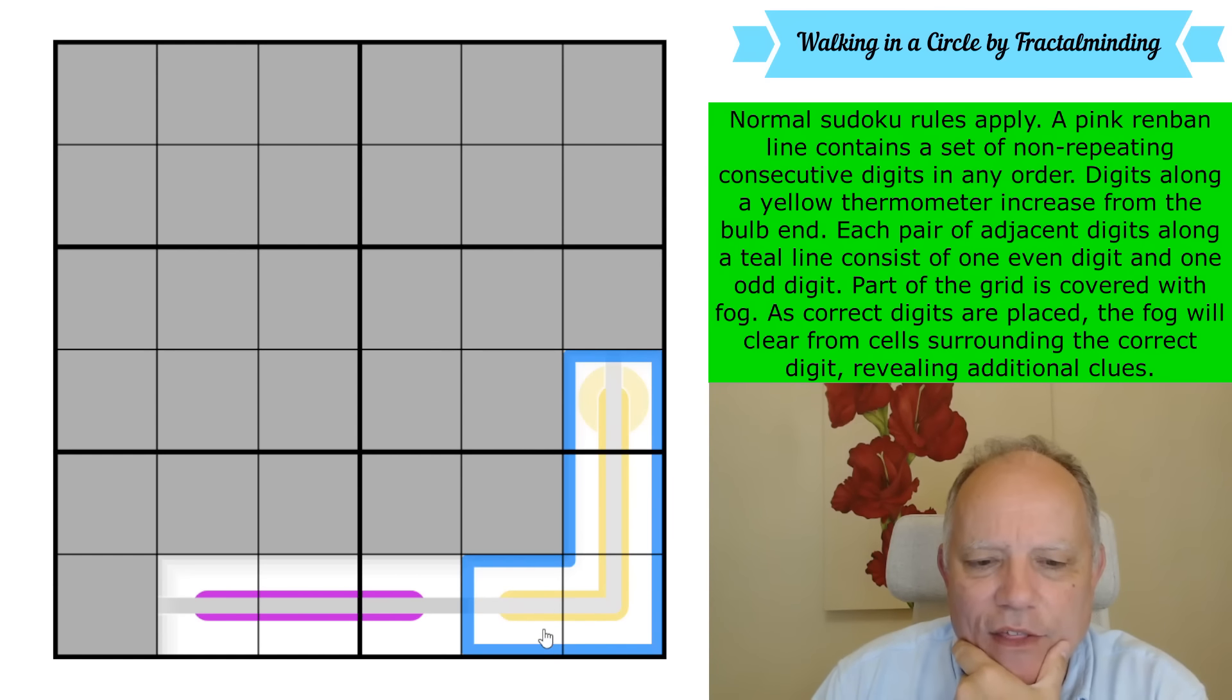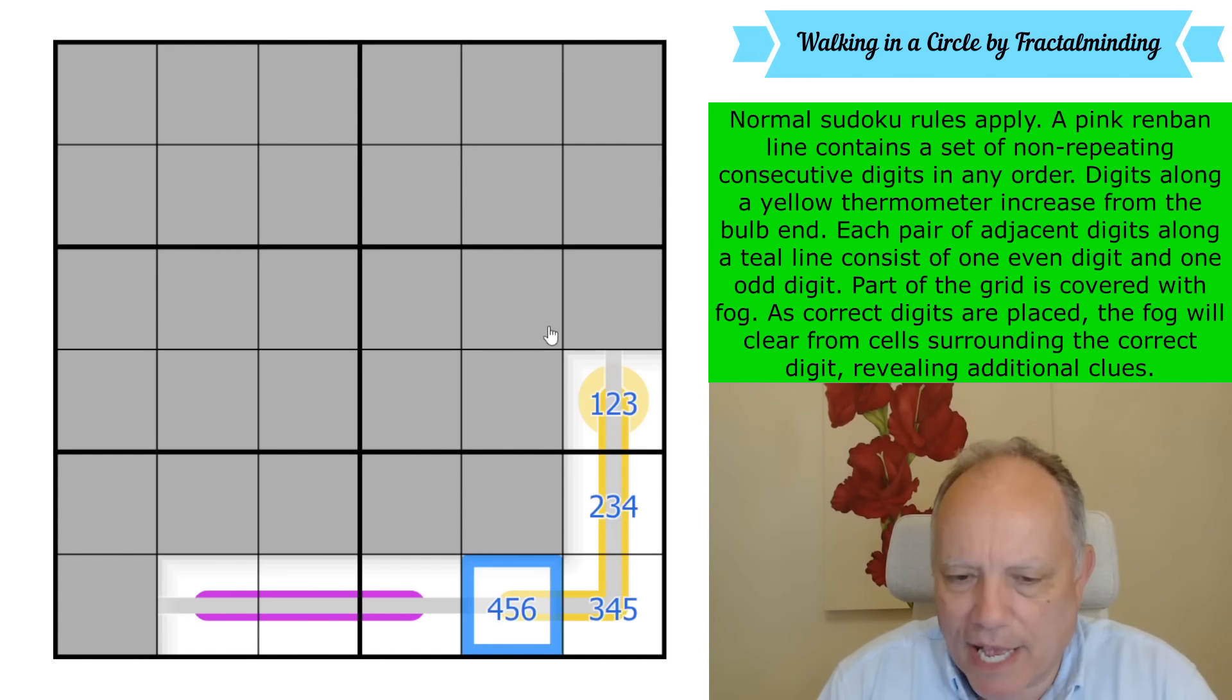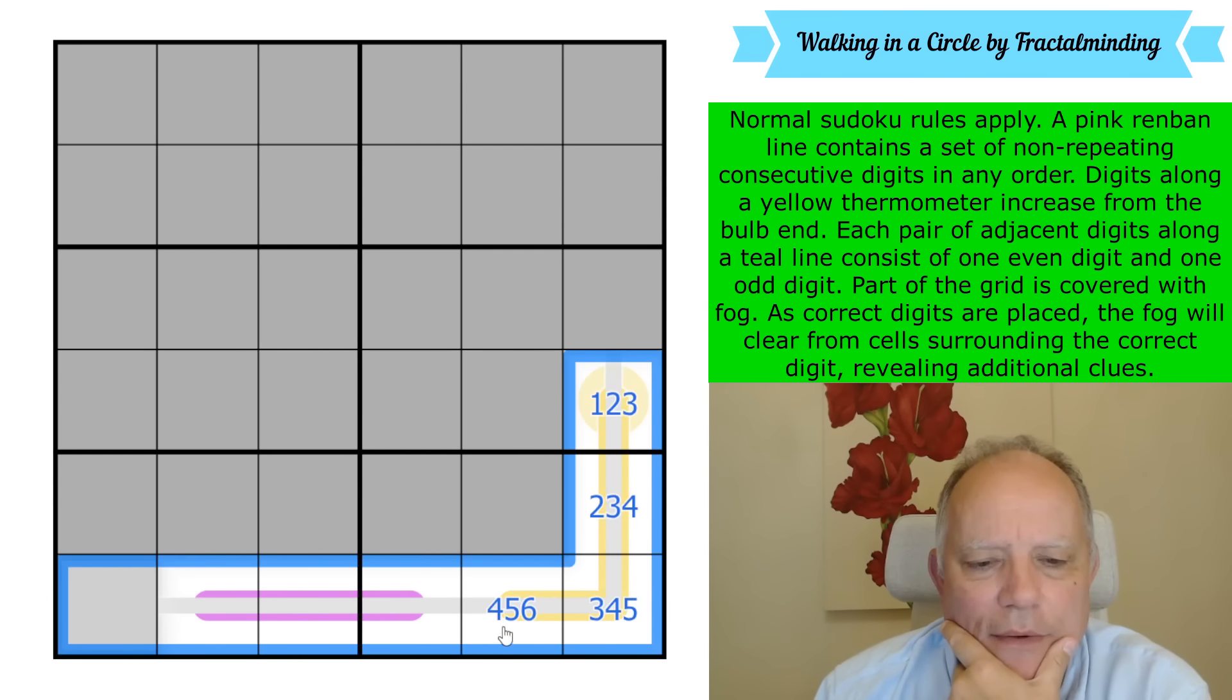I want to combine the parity line rule and this thermo. Let's look at the thermo, put all the possible candidates in each cell, because we have to increase between one and six. If this was a five, it would have to go five, then even four, then odd three, then even two. So there's only one combination that works if it starts even at the bulb. This teal line continues all the way around, so the odd-even pattern runs all the way along the bottom row.